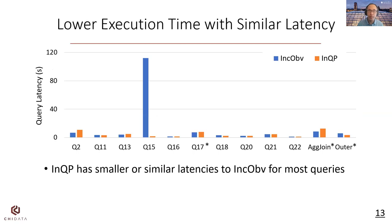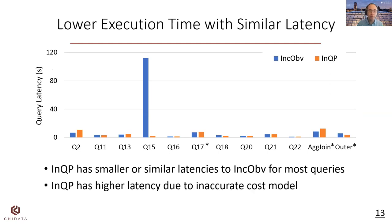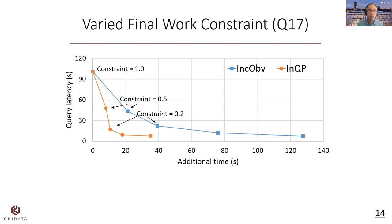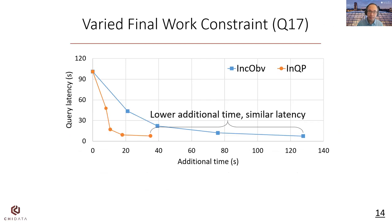Let's look at the query latency with respect to the same constraints. We can see NQP has smaller or similar latencies to the single-pace approach for most queries. In some outlier cases such as Q2, NQP has higher latency, which is due to the inaccuracy of the cost model. We also report NQP's performance under varied final work constraints, with additional time on the x-axis and query latency on the y-axis. Starting with constraint 1 (batch processing) and gradually increasing from 0.5 to 0.05, we can see that for all constraints, NQP has much lower additional time and also similar latency.